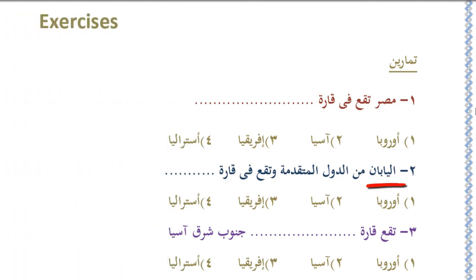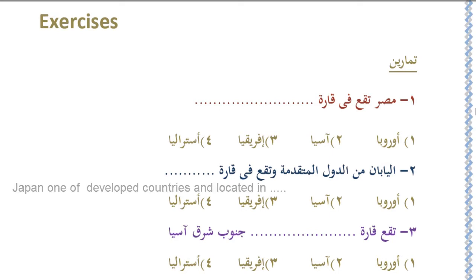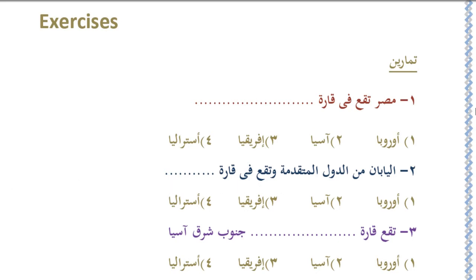Second question: Al-Yaban min al-duwal al-mutaqaddima wa taqau fi qara — Japan is one of the advanced countries and is located in which continent? One: Urubba (Europe), Two: Asia, Three: Ifriqiya (Africa), Four: Australia. Which one is the correct answer? If you said number two, Asia — you are right.